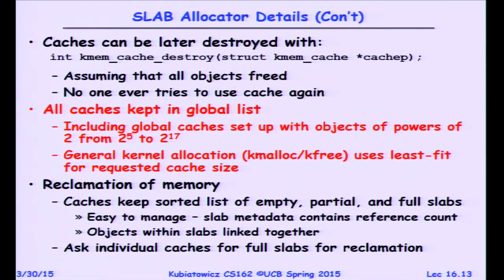We've talked about general virtual memory and the clock algorithm. When you probe into a real operating system and look at the actual memory structures, they get pretty complicated pretty quickly. For instance, every slab allocator in principle can have its own version of the clock algorithm, because when memory becomes insufficient, you can go through and ask each slab allocator to give back some free pages. Any questions before we move on to I/O?